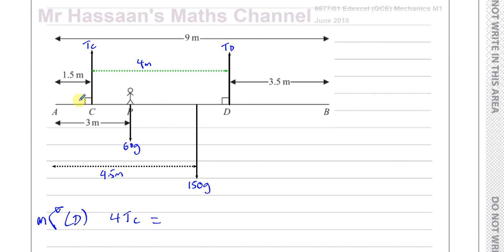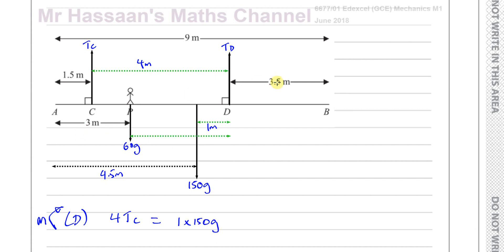That equals the anti-clockwise moments about D. The beam weight acts at 4.5 metres from A; BD is 3.5 metres, so the distance from the beam's centre of mass to D is 4.5 plus 3.5 minus 9 — actually, 4.5 plus 3.5 equals 8, so that distance is 9 minus 8 = 1 metre. For the gymnast at P: AP is 3 metres and BD is 3.5 metres, so the distance from P to D is 3 plus 3.5 minus 9... that gives 2.5 metres from D to P. So: 4 × Tc = 1 × 150g + 2.5 × 60g.